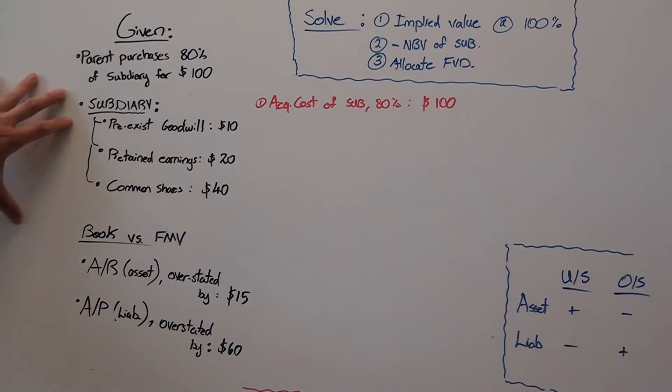Let's say the given information is parent purchases 80% of the sub for $100 paying by cash. On the date of acquisition the sub had pre-existing goodwill of $10, it had retained earnings of $20, and it had common shares of $40.